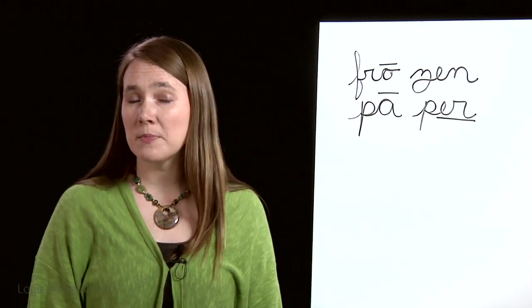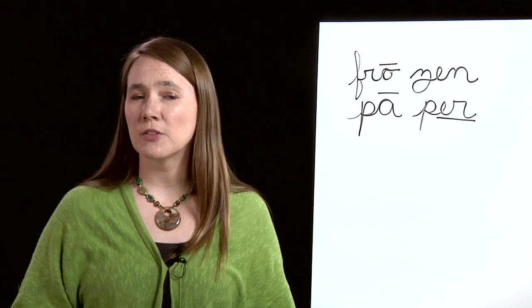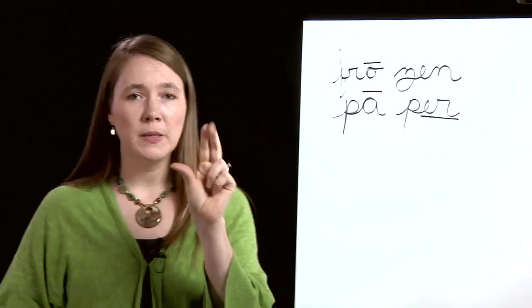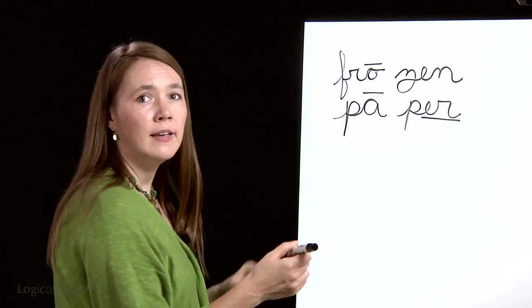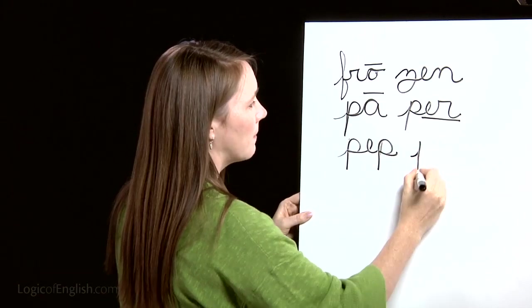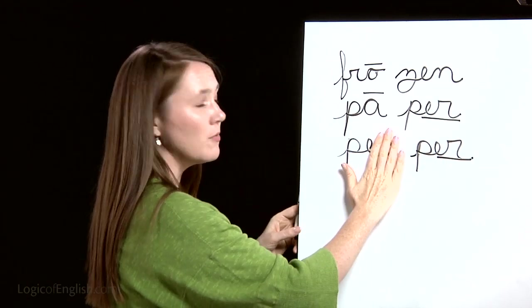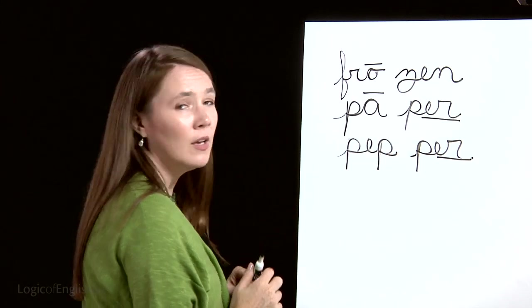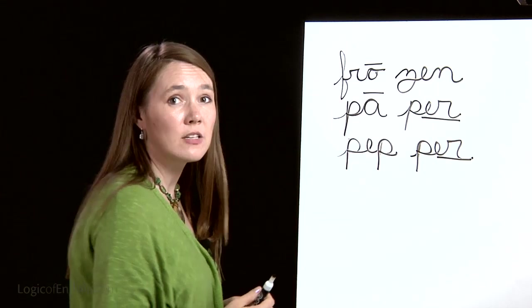The third word is 'pepper.' Please pass the pepper. How many syllables in 'pep-per'? Two. The first syllable is 'pep,' P-E-P. Second syllable is 'per,' P-R. Go ahead and sound it out and write it. P-E-P, second syllable is 'per,' P-R. And how will we mark it? We'll underline the 'er.' What would it say if we didn't double the P? It would say 'peeper' because the E would be at the end of the syllable. One of the most common reasons for double consonants in English is to close the syllable so that the vowel says its short sound.